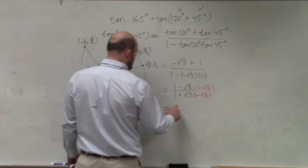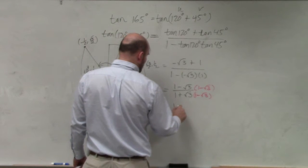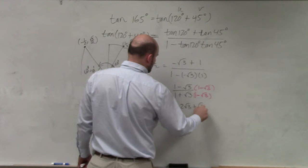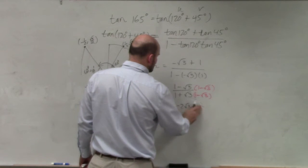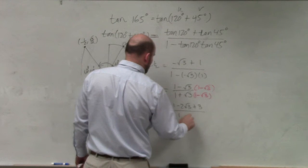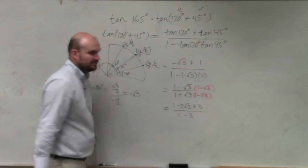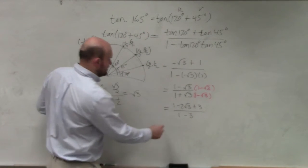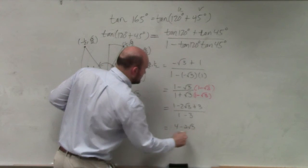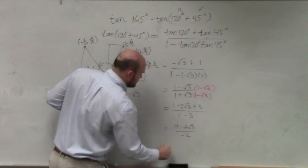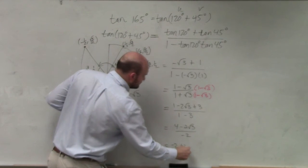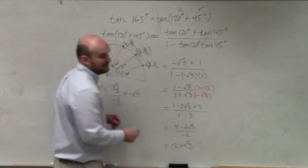Multiplying this out in my head, I get 1 minus 2 square root of 3 plus 3. Over here, I get 1 minus 3 when I do my difference of two squares. I simplify this. That gives me 4 minus 2 square root of 3 over negative 2. Divide the negative 2 into both of those. That is my final answer.